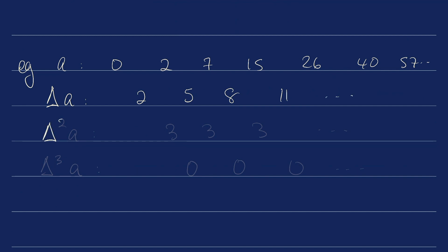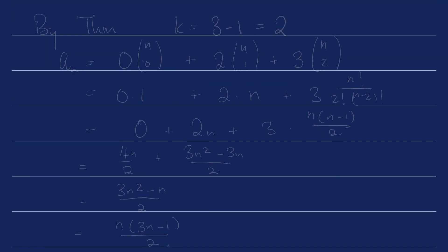And then 3, 3, 3, etc. The third time you apply the difference operator, we're going to get 0, 0, 0, 0, the zero sequence. All right, what does this tell us? By the theorem, k is going to be the point before we get the zero sequence, so k is going to be 3 minus 1, which is equal to 2.